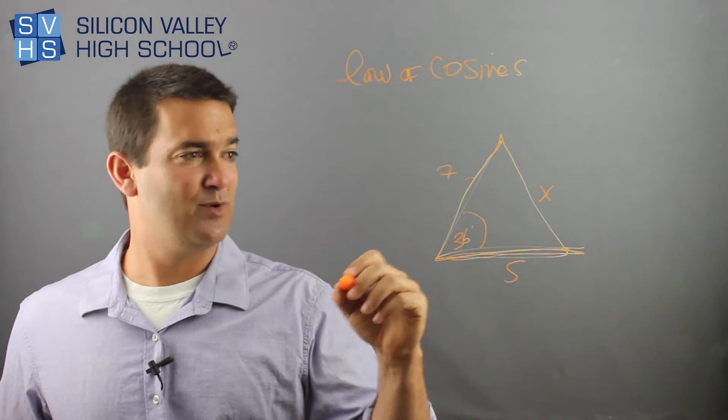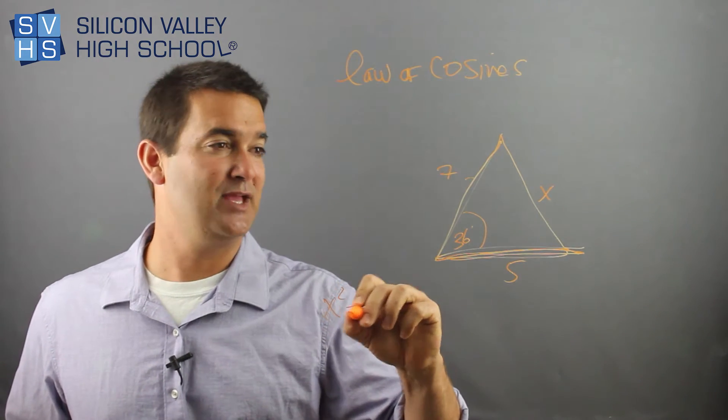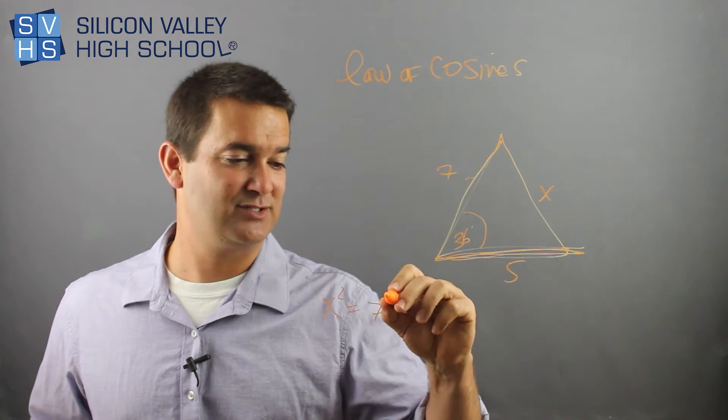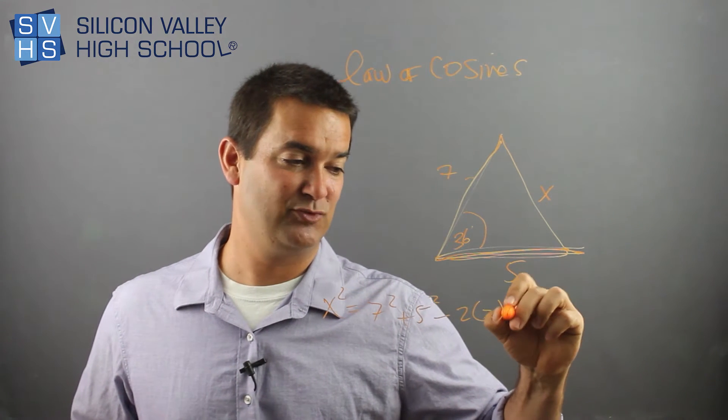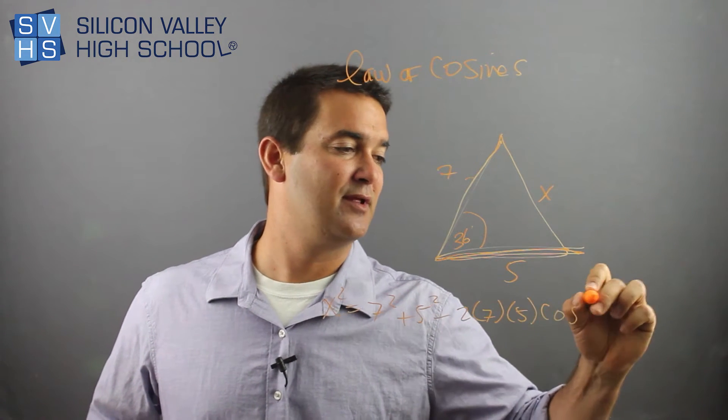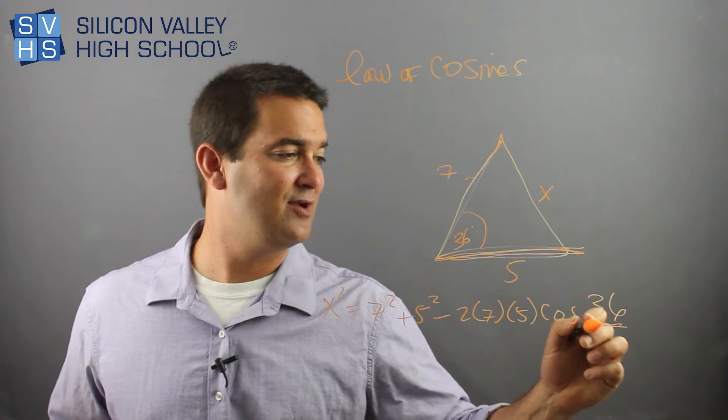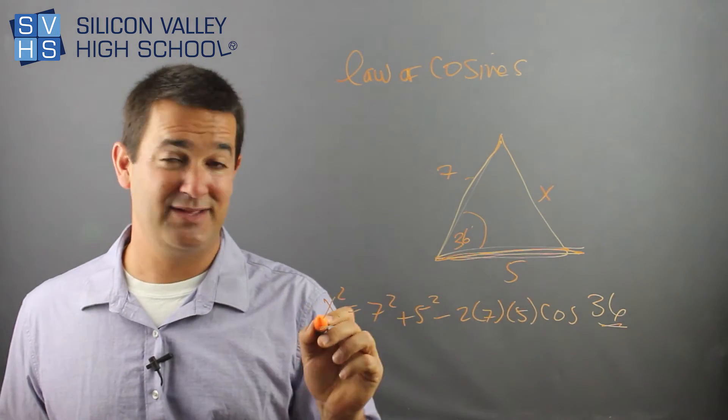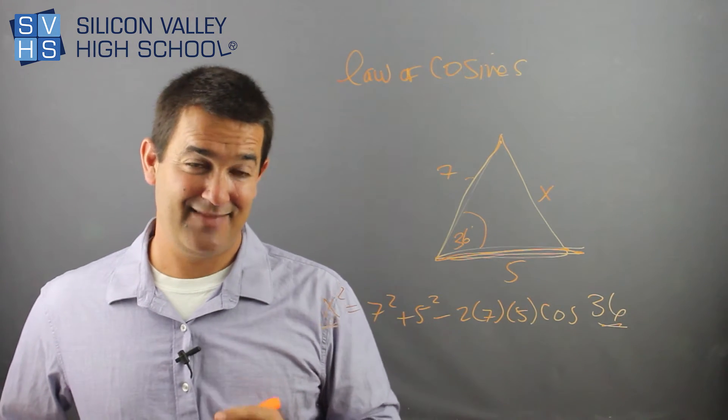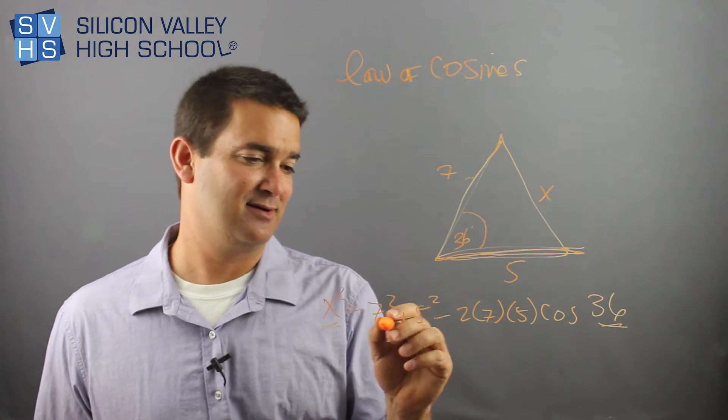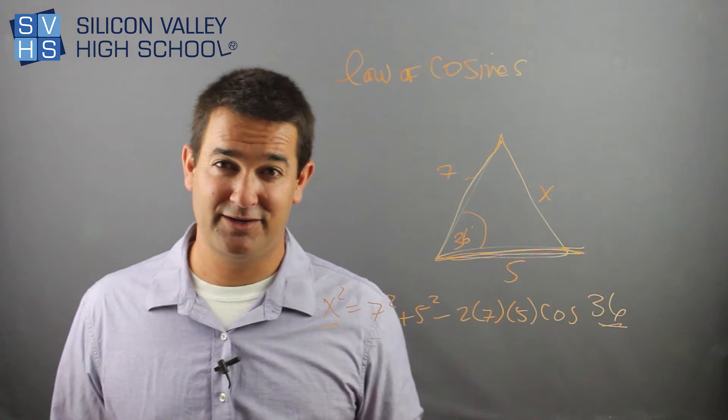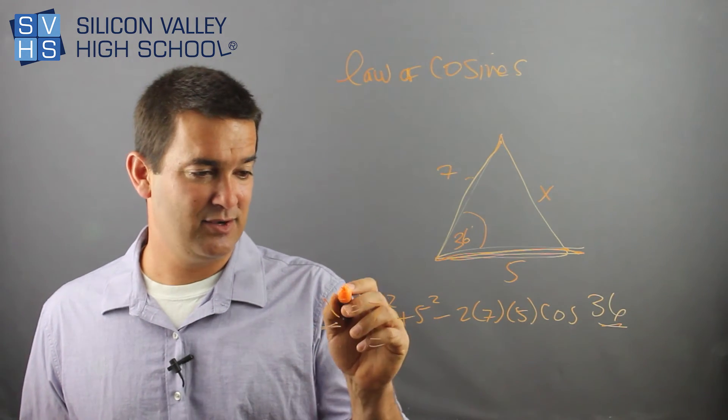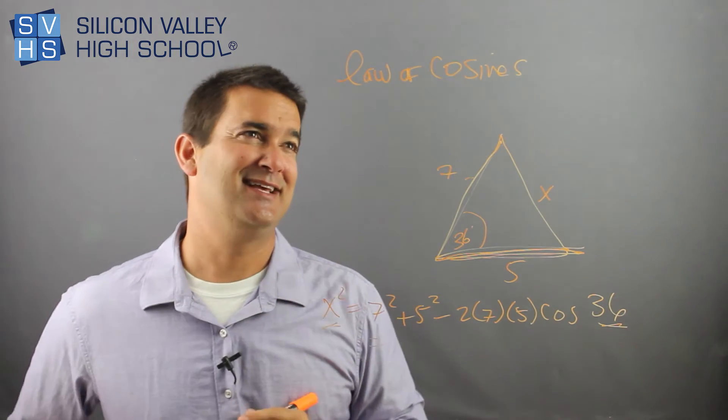So my law of cosines would be X squared equals the other two, seven squared plus five squared, minus two times seven times five, cos 36. Notice the cosine of the angle matches the guy on the other side of the equals. And that's it. And then you just do a bunch of fancy schmancy math. You're going to add all these up, times them by the cosine 36. Don't forget at the end, you're going to root both sides to get your solution.